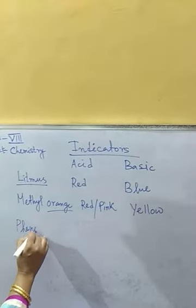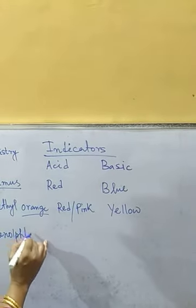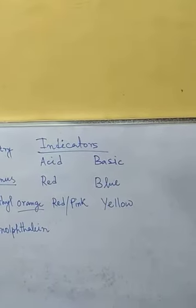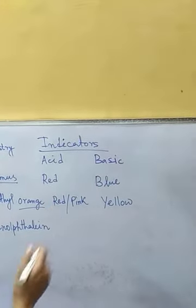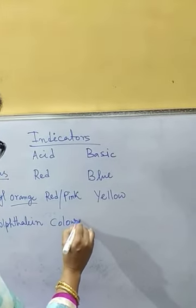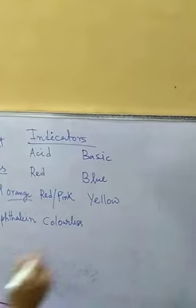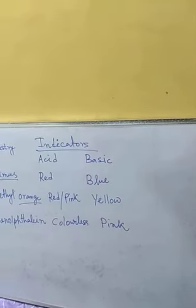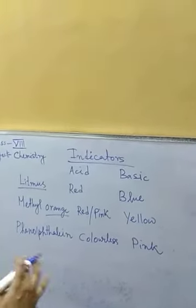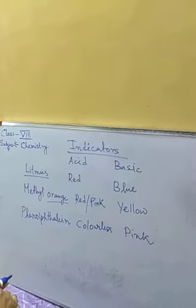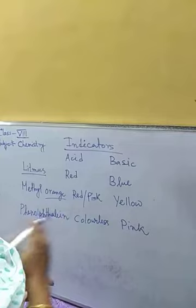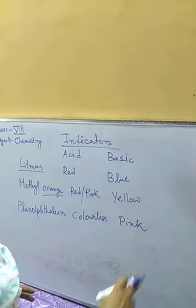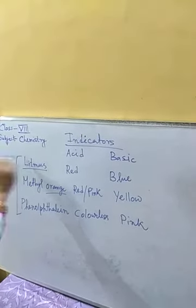Next comes phenolphthalein. In acid medium, phenolphthalein is colorless — no color. But in basic medium it is violet or deep pink. So if we add phenolphthalein in acid medium it will be colorless only, but if we add it in basic medium then it will show its color from colorless to pink. These are the main three indicators in our syllabus.